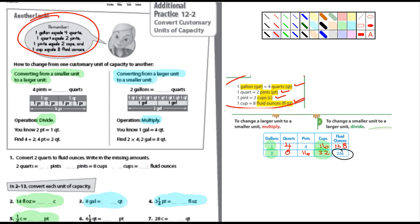And you've gotten this information before. If you flip back a few pages in your book, you'll see it also. And then again, how can you change from one customary unit of capacity to another?